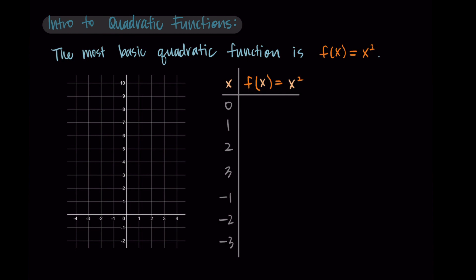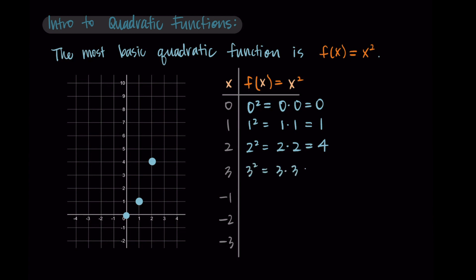What's noteworthy is that we have x squared — that squared on the x is what's special. For input 0: 0 squared = 0 × 0 = 0, giving point (0, 0) at the origin. For input 1: 1 squared = 1 × 1 = 1, giving point (1, 1). For input 2: 2 squared = 2 × 2 = 4, giving point (2, 4). For input 3: 3 squared = 3 × 3 = 9, giving point (3, 9).